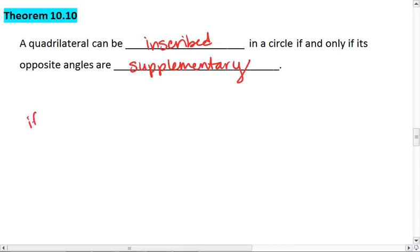So what this means is that if we have a circle with an inscribed quadrilateral, and it helps if my lines are a little bit straighter.